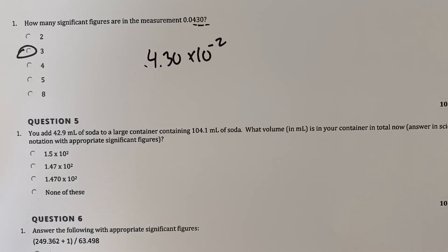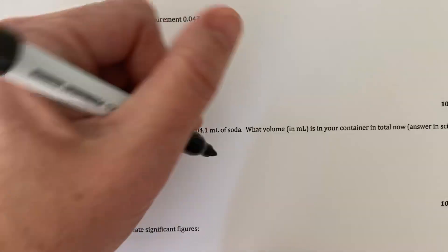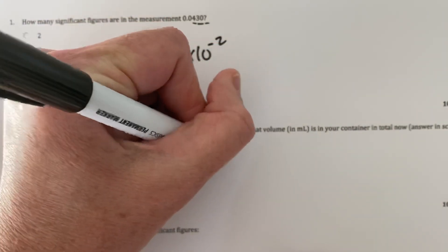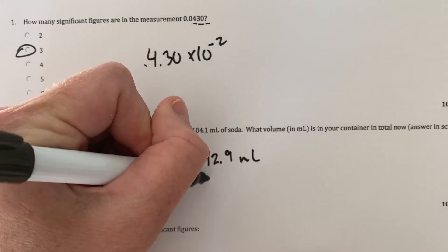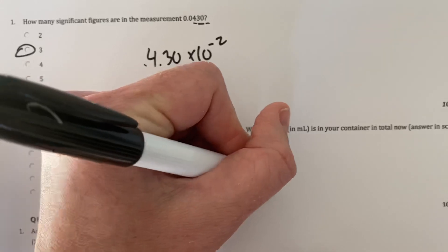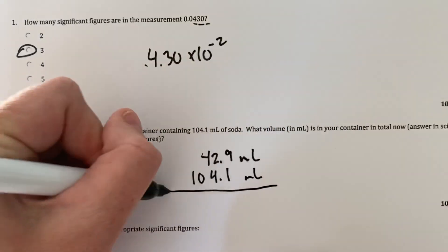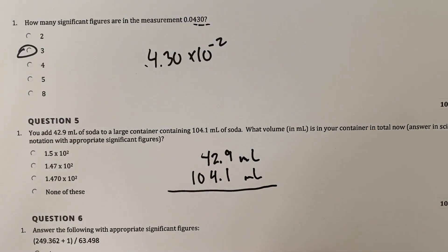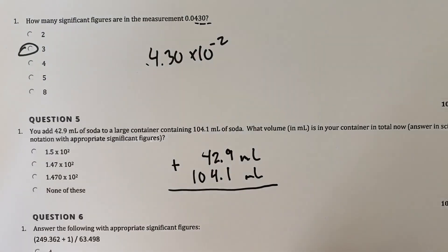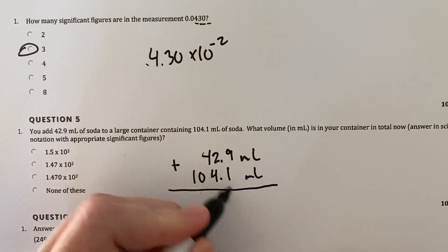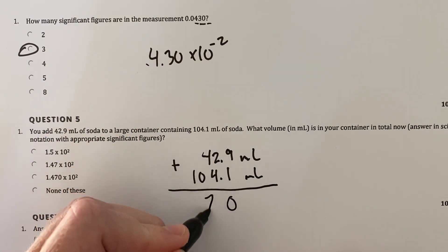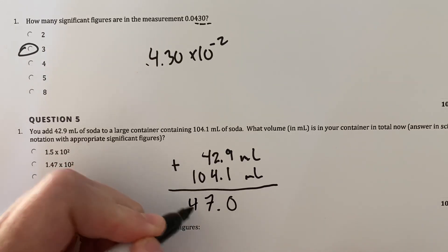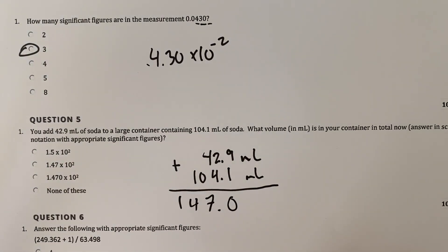Alright, number five. You add 42.9 milliliters of soda to a large container containing 104.1. And it asks you, what's the volume in your container now? So when you add, you're going to want to be sure to look at precision. If we do this the traditional way, this gives us a zero, we carry the one, then we got seven here, 0.741. So I got 147.0.